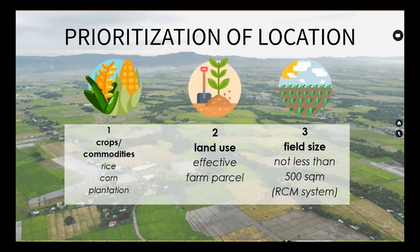Prioritization of location: one — crops and/or commodities: rice, corn, plantation; two — land use; effective farm parcel; three — field size not less than 500 square meters in the RCM system.